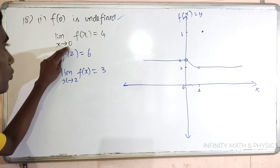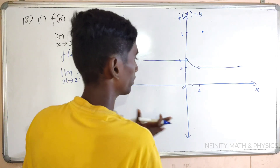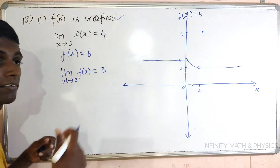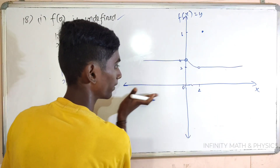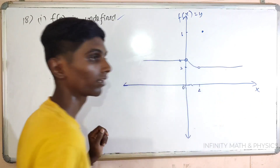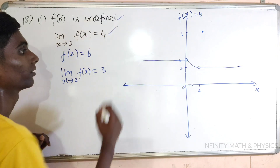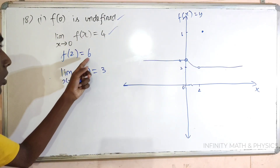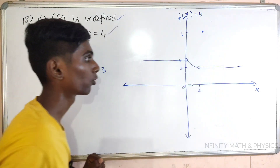Second: limit when x tends to 0, f is equal to 4. When I approach 0 on the left side and right side, the limit is 4. So when I approach 0 on the left side, I approach 4. This condition is true. Next: f of 2 is equal to 6 — the function value at 2 is equal to 6. This condition is true.